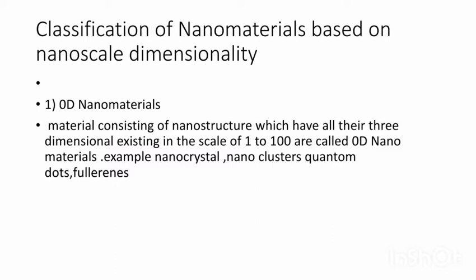0D nanomaterials are materials consisting of nanostructures which have all their 3 dimensions existing in the nanoscale of 1 to 100 nanometers. For example: nanocrystals, nanoclusters, fullerenes, and quantum dots.